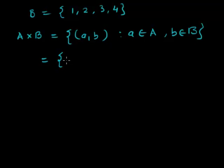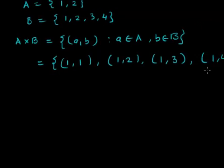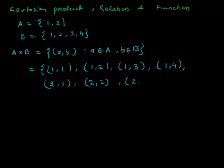So A cross B includes the pairs (1,1), (1,2), (1,3), (1,4) — where the first elements belong to set A and the second element belongs to set B — then (2,1), (2,2), (2,3), and (2,4). This is the Cartesian product of the given two sets A and B.